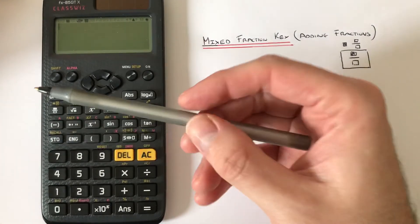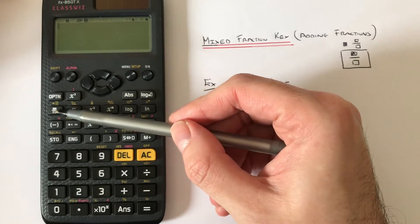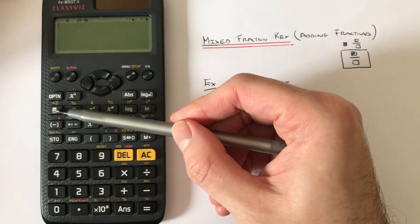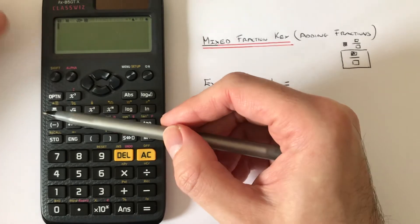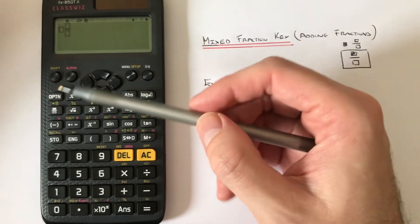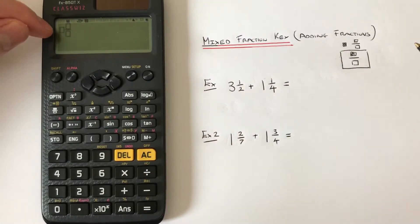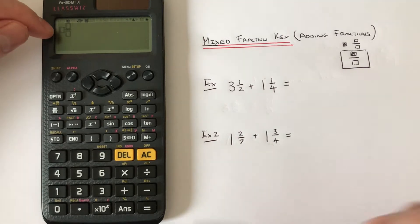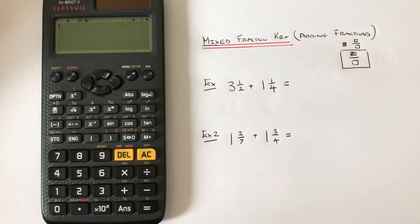We need to press shift and then the fraction key, and you'll see the mixed fraction format appear on the screen. Let's have a look at example one.